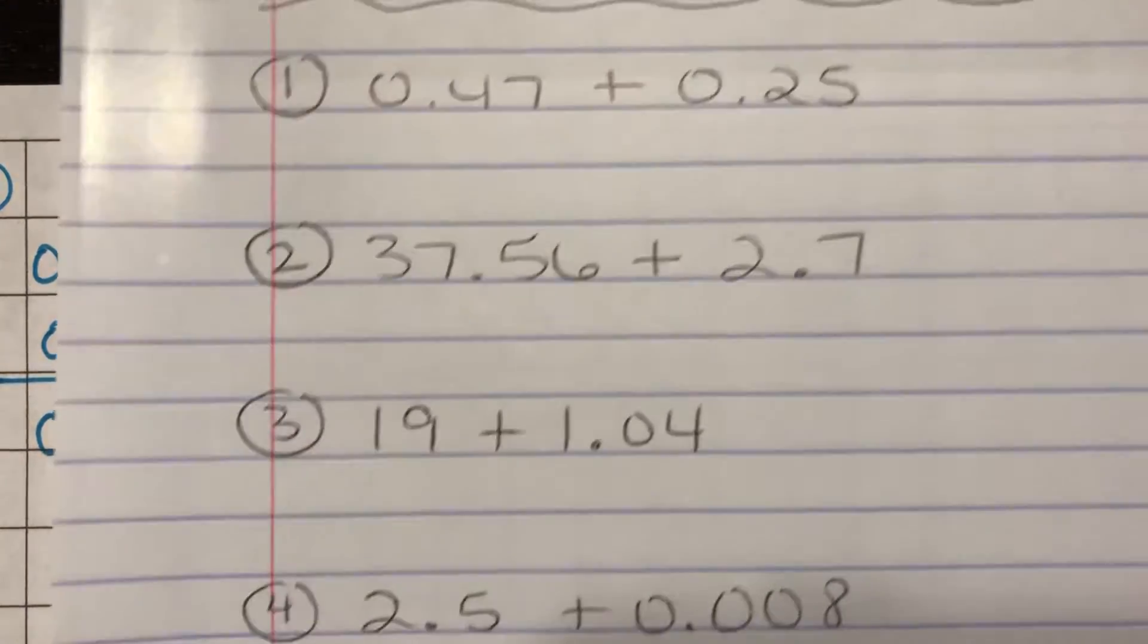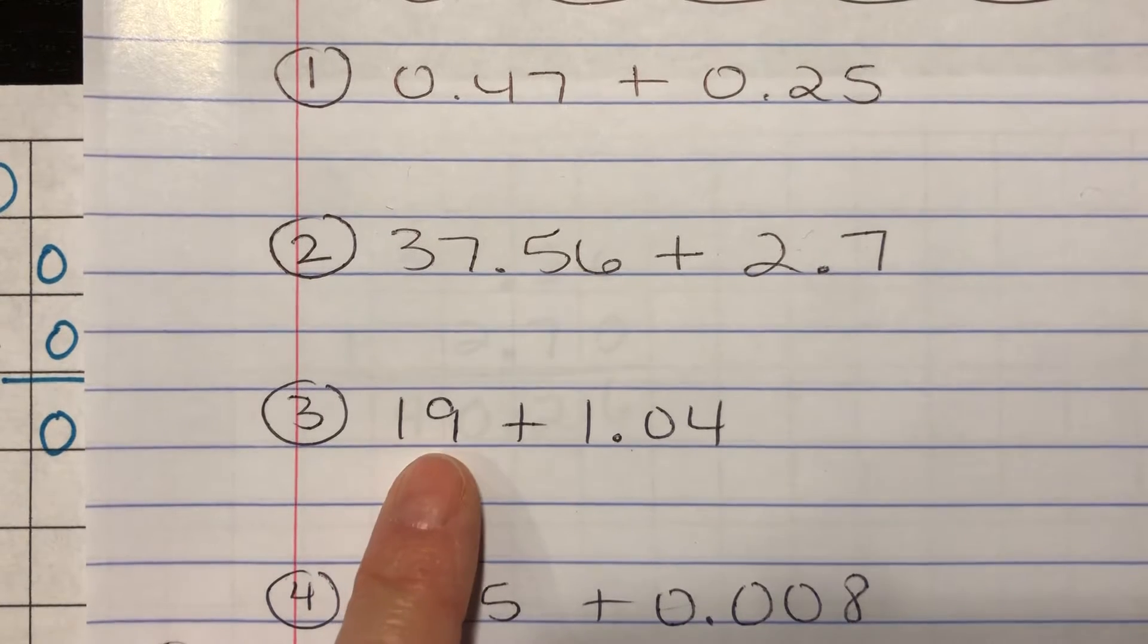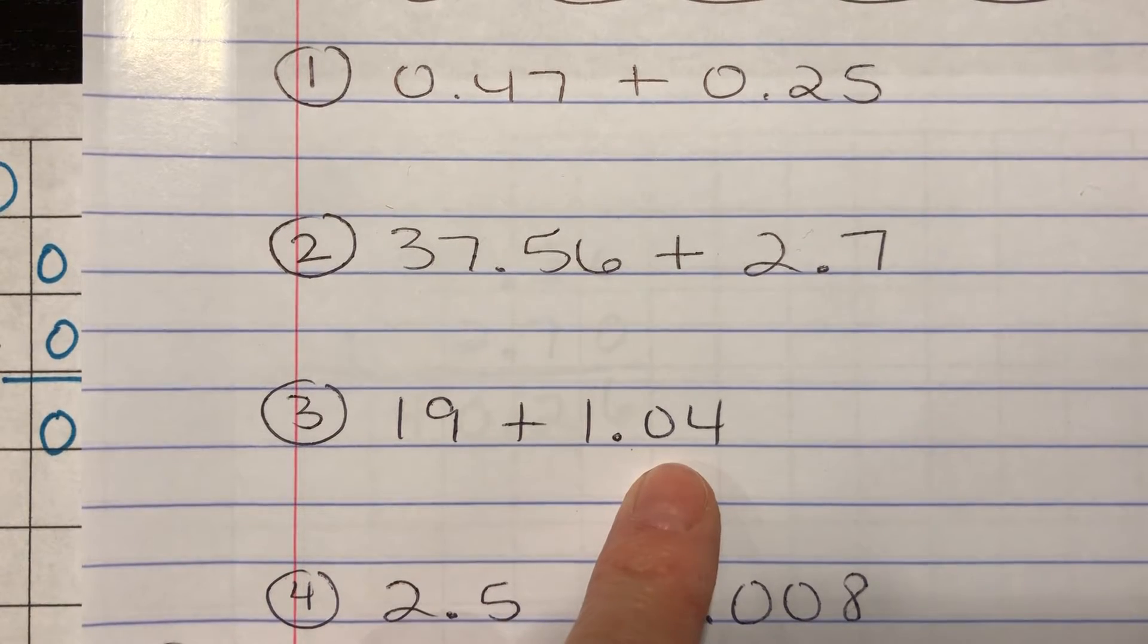Alright to your third problem. Number three. 19 plus one and four hundredths. So press pause, write that down.